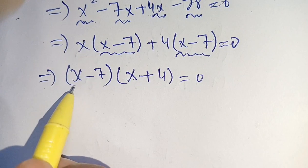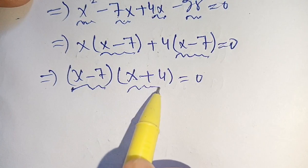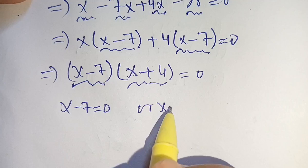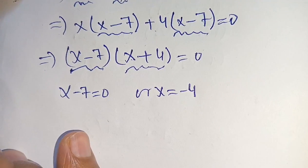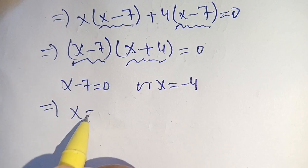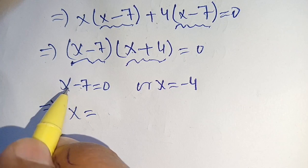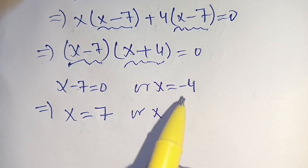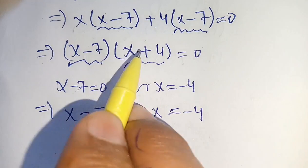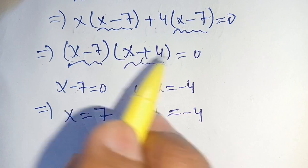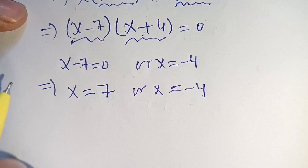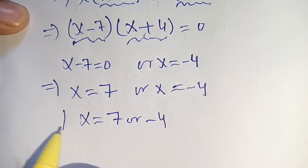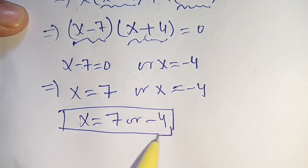We set each factor equal to zero: x minus 7 equals 0 gives x equals 7, and x plus 4 equals 0 gives x equals minus 4. Thus the values of x are 7 and minus 4, which are the required values that satisfy the given equation.